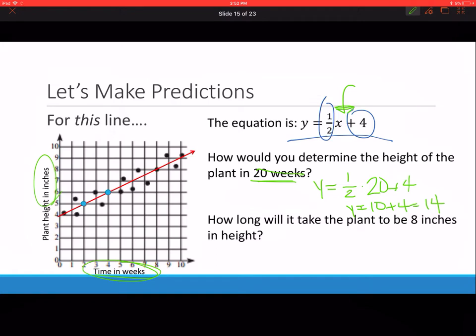How long will it take the plant to be 8 inches in height? We could look at this and estimate from our graph, go across, but that's not always accurate. In this particular example, we can do that. It's called interpolation because it's inside of our graph. We could draw it across and see that it's going to be 8 weeks, but let's double check.